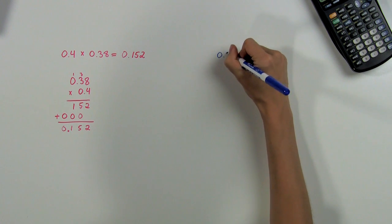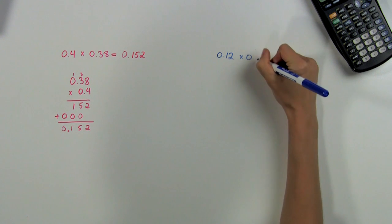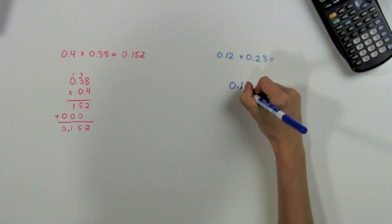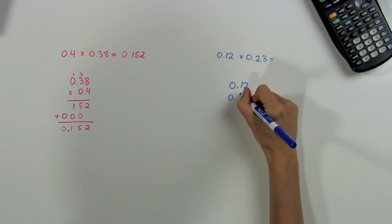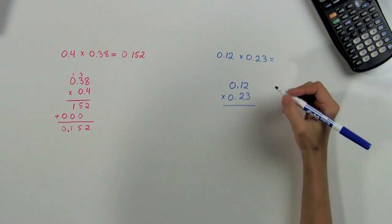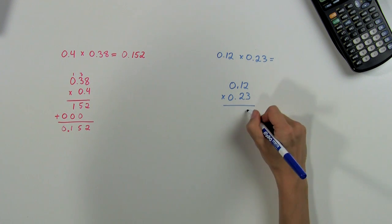We set up our problem like before, and this time it doesn't matter which number is on top since they are the same length. First, we multiply the 3 times the top row and get six, three, zero.